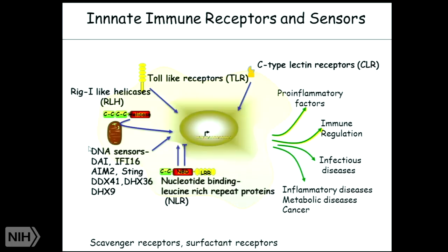The first innate immune receptor discovered was the toll-like receptor, then C-type lectins. We now know there are RNA sensors such as RIG-I-like helicases, a bunch of DNA sensors, and this is where our family of proteins belongs. This family has at least two names: NBDLR, which stands for Nucleotide Binding Domain Leucine-Rich Repeat, and NOD-like receptors, which stands for Nucleotide Oligomerization and Dimerization Domain Receptors. I actually prefer the term NBDLR, a name that 22 of us proposed years ago.